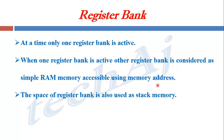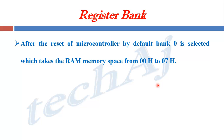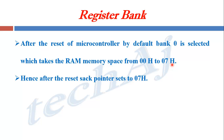The space of the register bank is also used as stack memory. Whenever the microcontroller is reset, by default bank 0 is selected, which takes RAM memory space from 00H to 07H — the first 8 bytes of RAM. Hence, the stack pointer always points to 07H so that whenever the first data is pushed onto the stack, the stack pointer is incremented to 08H and the first data is stored at that location.